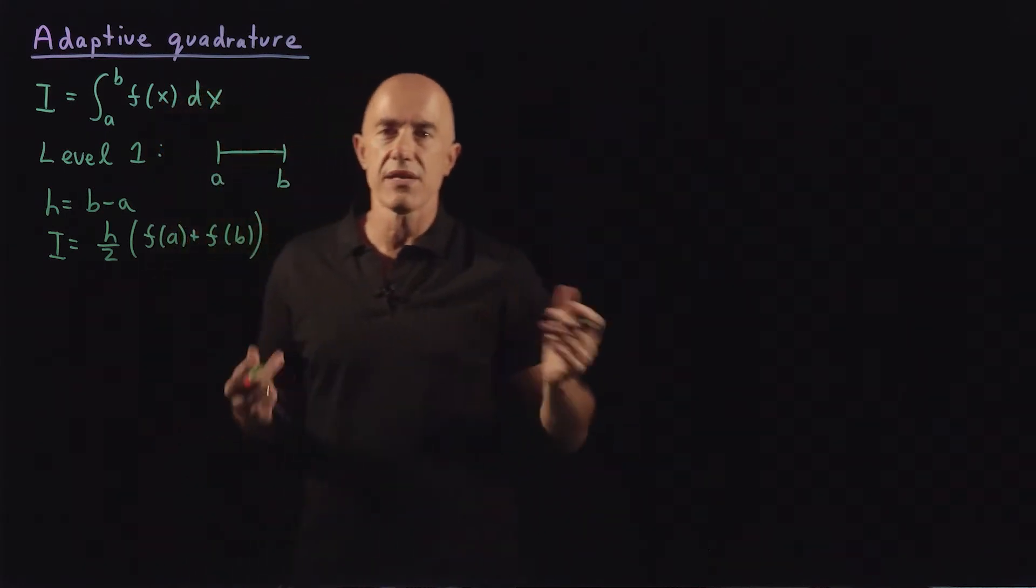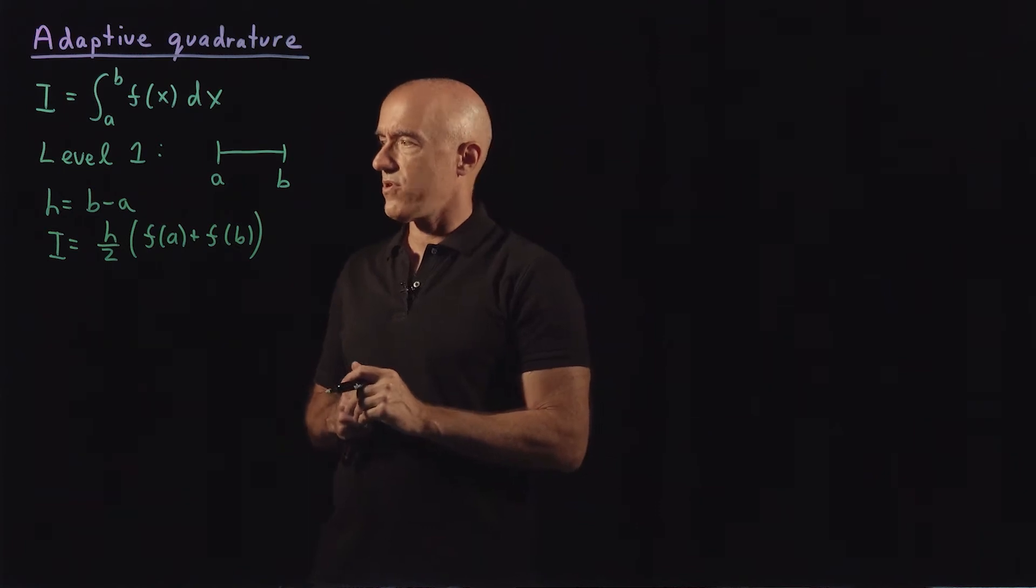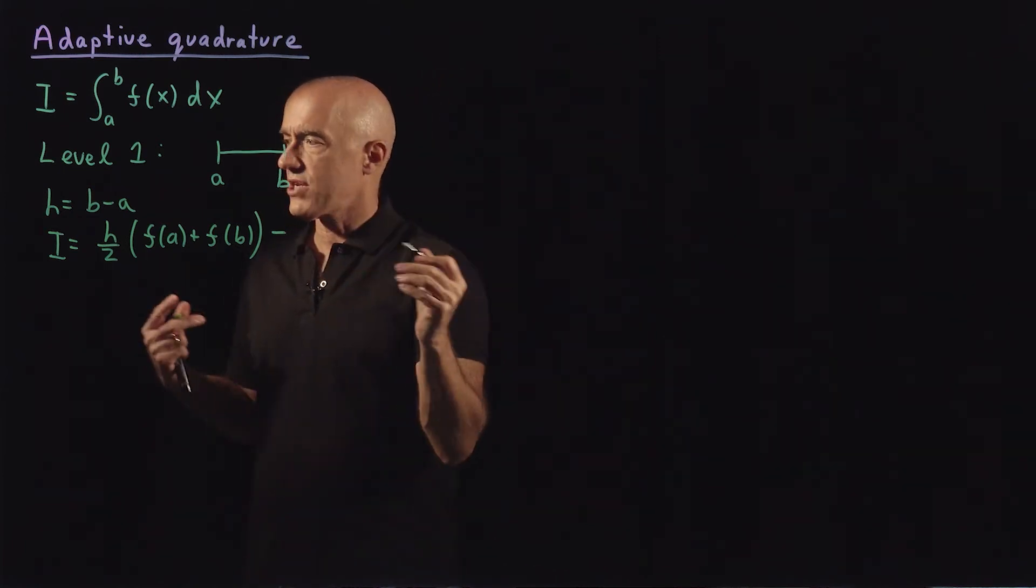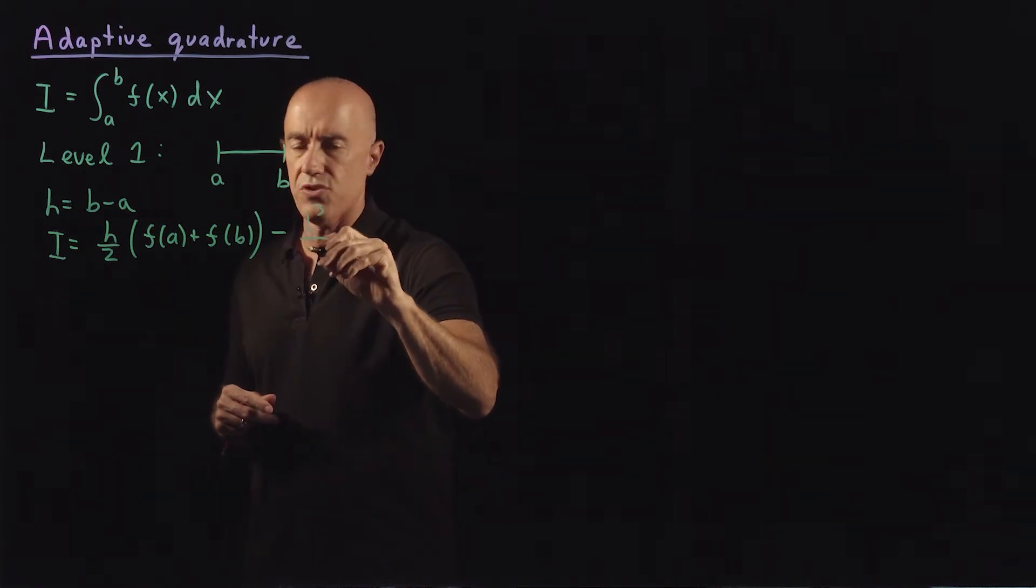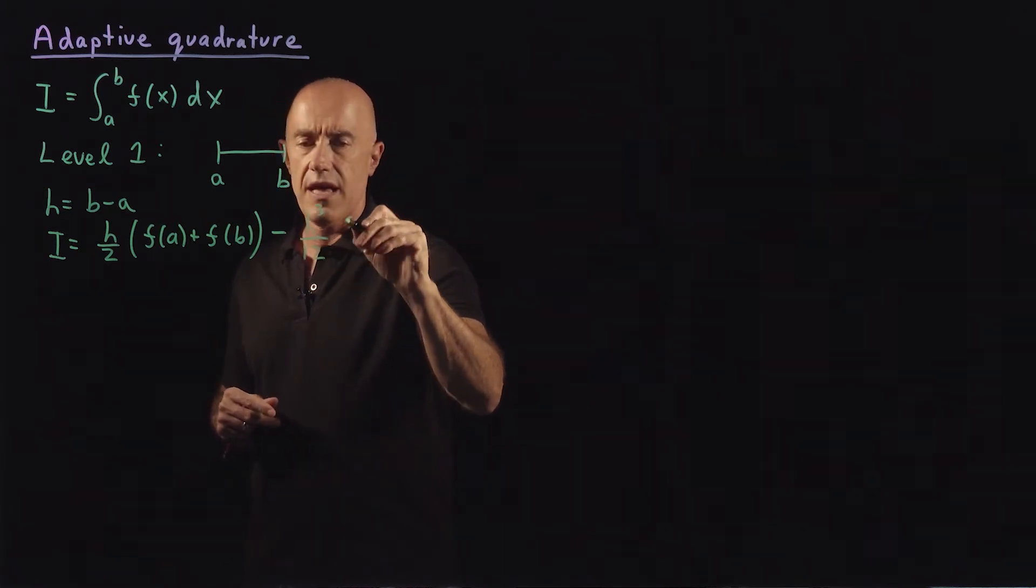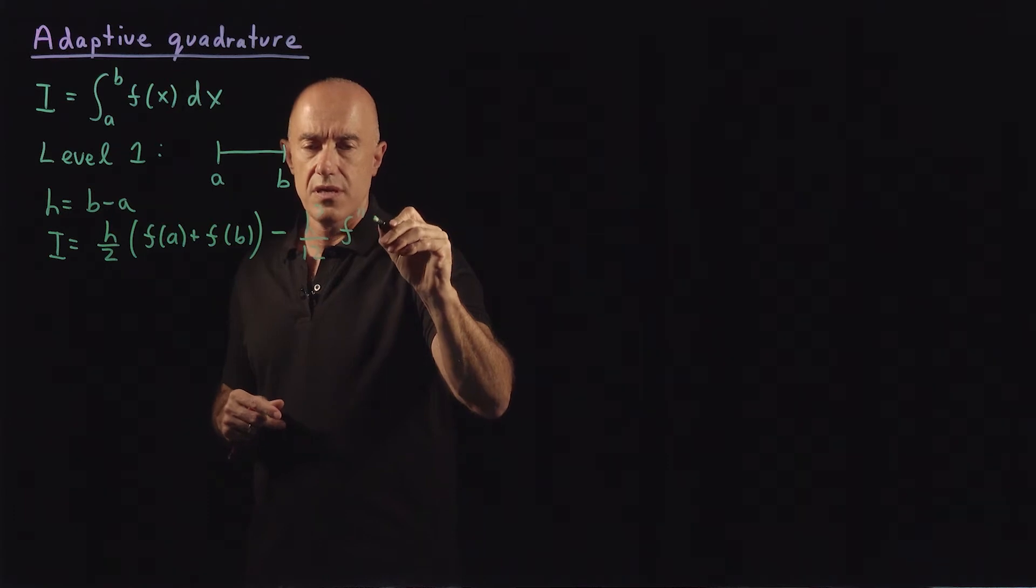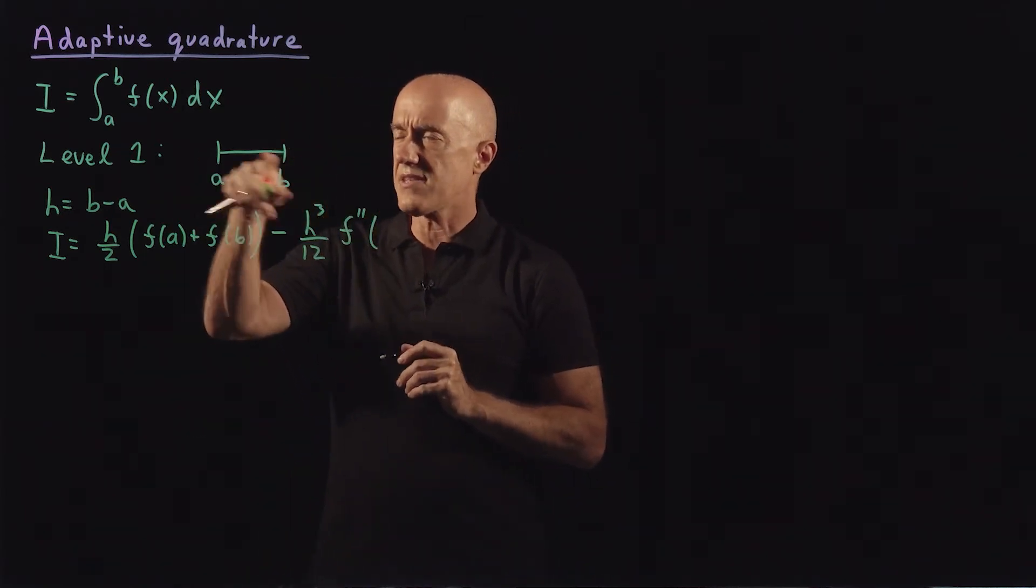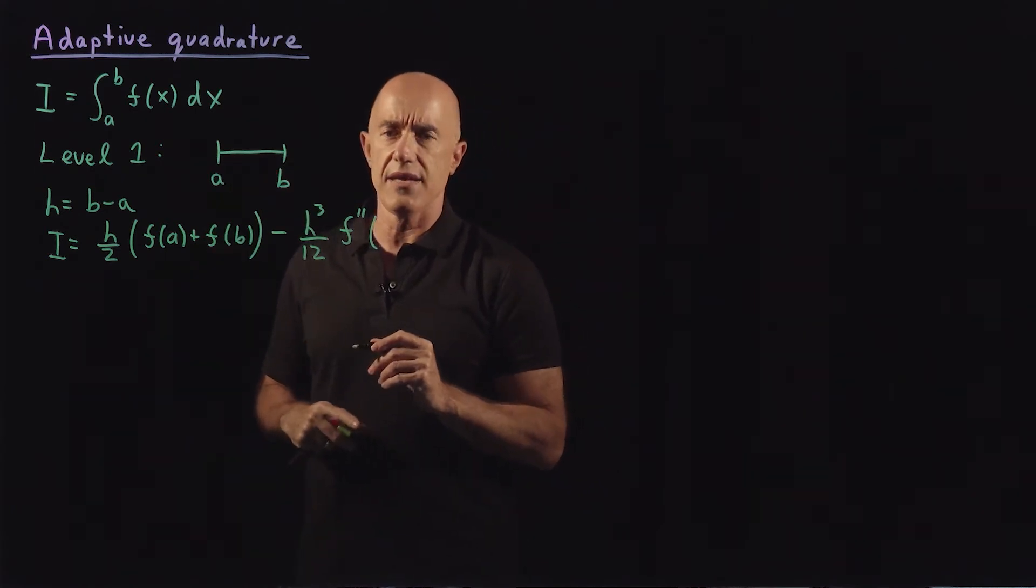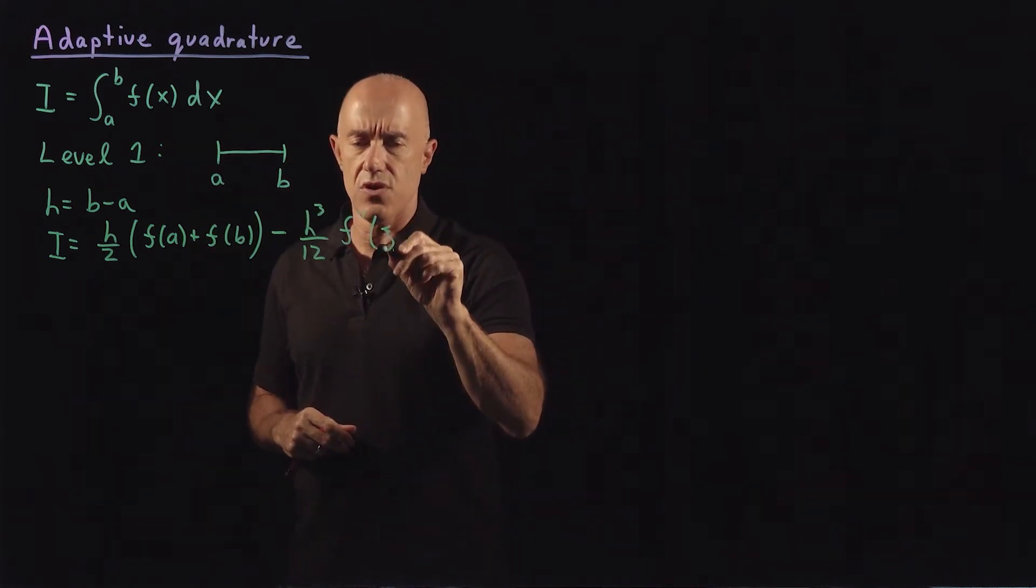The trapezoidal rule will be h over 2 times f of a plus f of b. That's the elementary formula for the trapezoidal rule. And then let's look at the error.